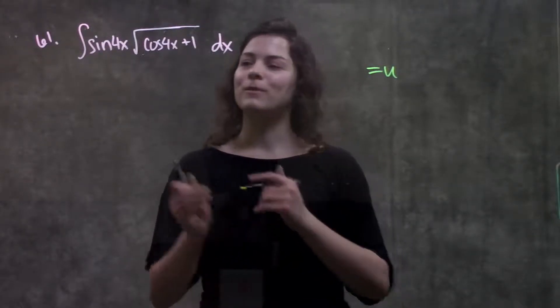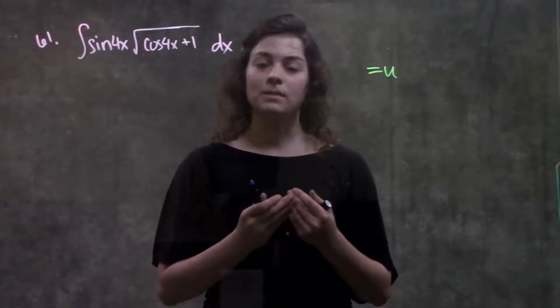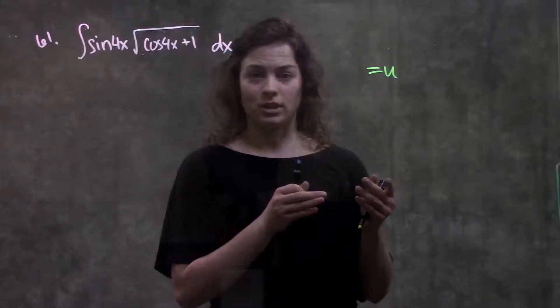For u-sub, we're going to take part of this function and set it equal to u. Generally, the part of the function you want to set equal to u is going to be something that's within another function.